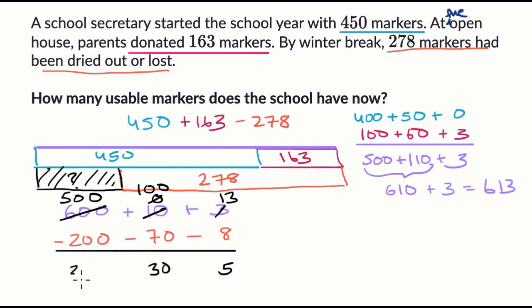And then I have 500 minus 200 is 300. So 300 plus 30 plus five, which is 335. 300, three tens and five ones. So that's how many usable markers the school now has. 335.